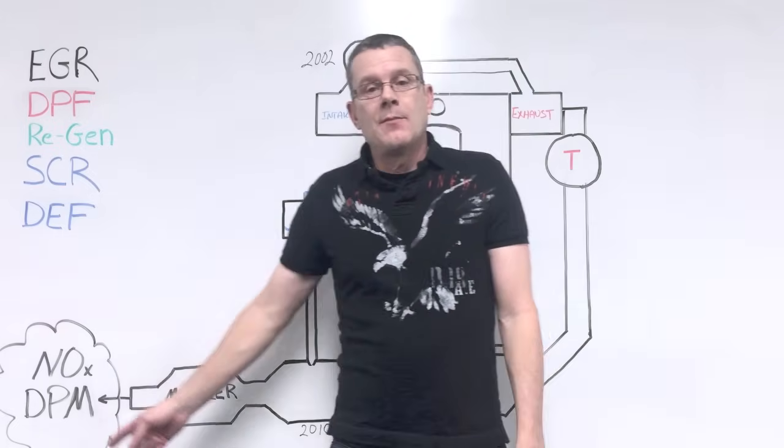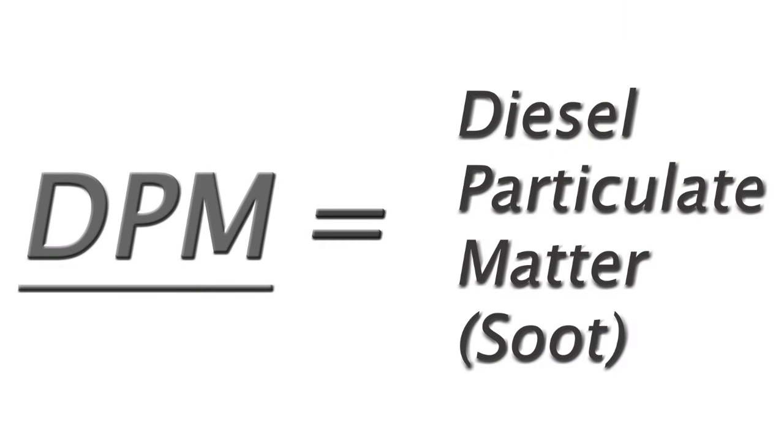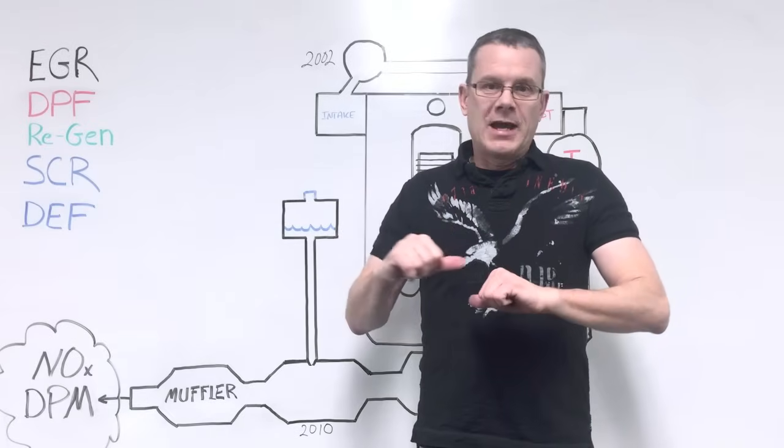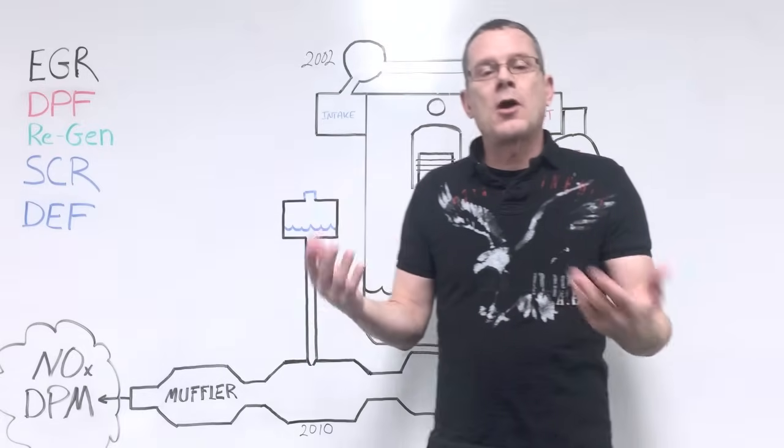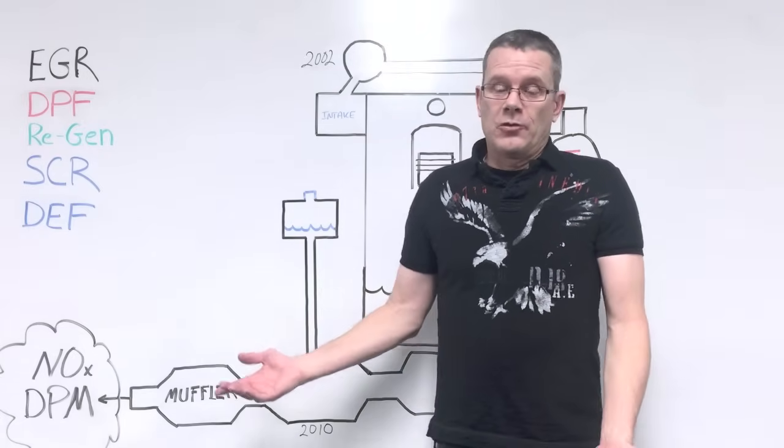The second is DPM, or diesel particulate matter, and that's the black smoke you see coming out the tailpipe when you step on the gas really hard. It's soot, or in other words, partially burned fuel, and no one likes breathing those either.